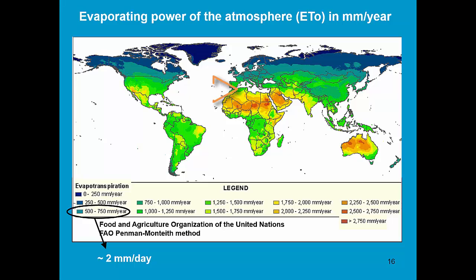In North Africa, where we have the green color, it is about 4 mm per day, on average over the year. While in the desert, the brown color refers to 8 mm per day.